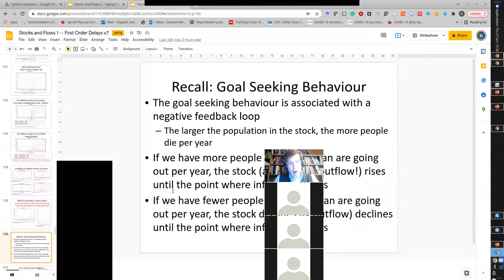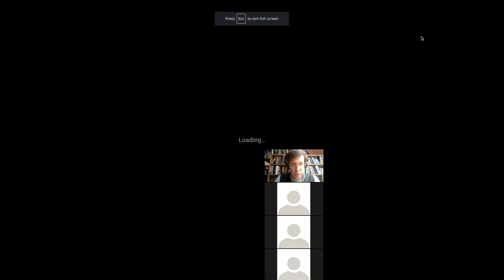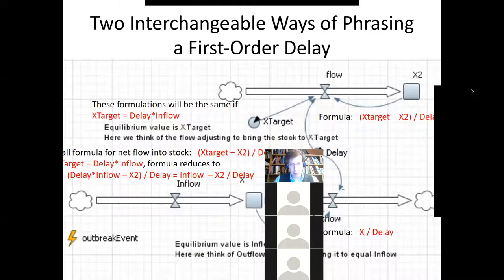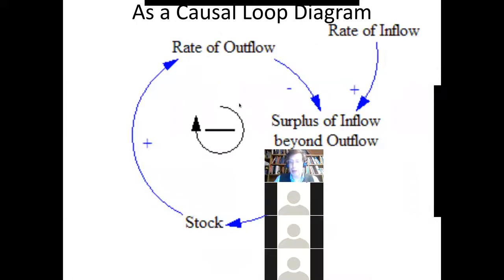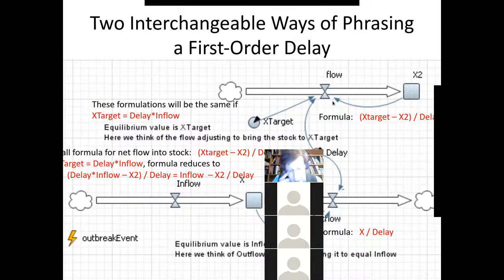So a first-order delay is a delay of sorts — a delay between the outflow as expressed in terms of the inflow. The outflow is a delayed version of the inflow. That's one point I wanted to make. There's another point involving goal-seeking behavior: first-order delays are associated with the stock wanting outflow to equal inflow, adjusting until they're equal. There's a way to express this as a causal loop diagram.